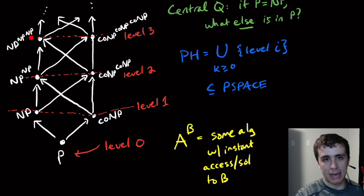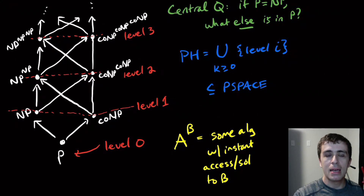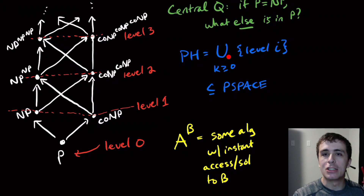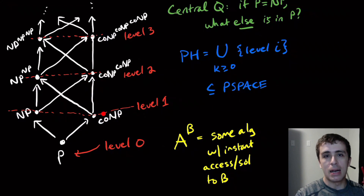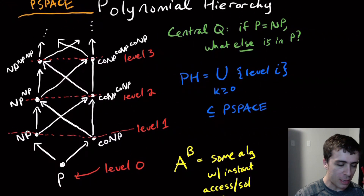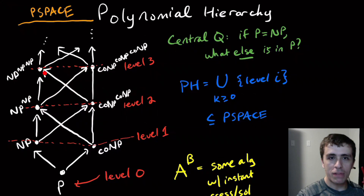We can have three levels, four levels, five levels, six levels — as many levels as we like. The polynomial hierarchy, which I'll call PH, is going to be the union over all of these levels. So take all of the levels and all of the languages, and just union them all together.